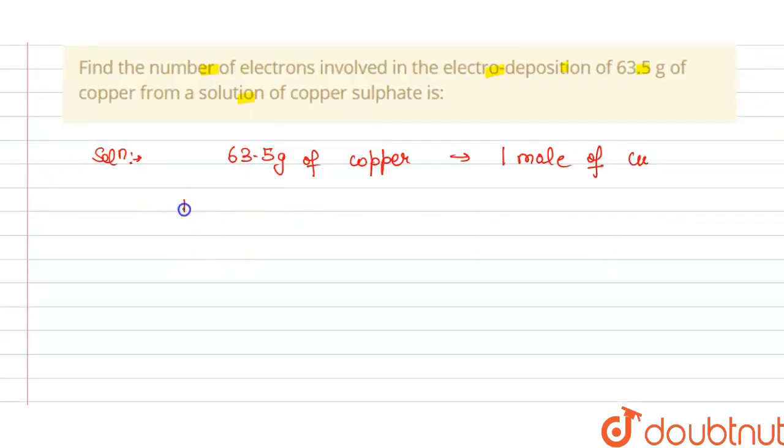We have to firstly find the number of equivalents before finding the number of electrons. So this is equal to number of moles multiplied by N factor.